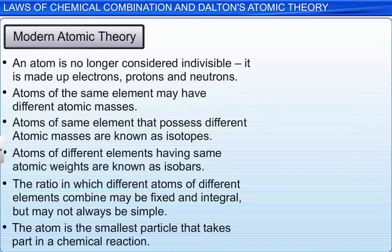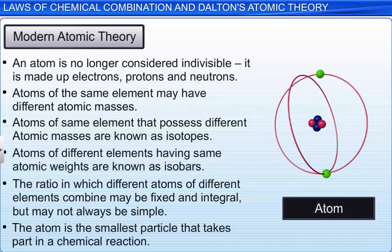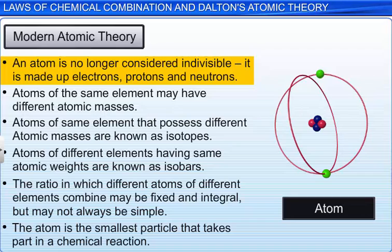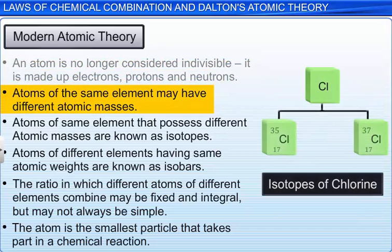Here are the key findings of the theory. An atom is no longer considered indivisible. It is made up of electrons, protons, and neutrons. Atoms of the same element may have different atomic masses. Such atoms are known as isotopes.